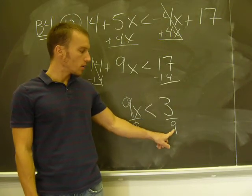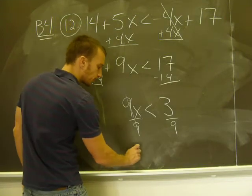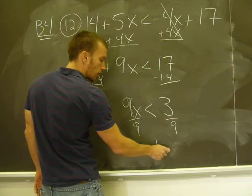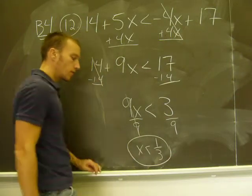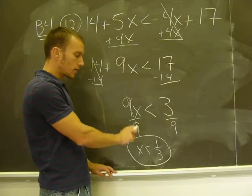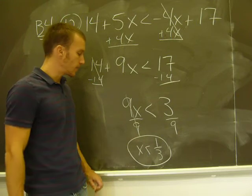Divide that by 3 is 1, this by 3 is 3. So my final answer is x is less than 1 third. Again, we didn't have to flip our inequality for this example because I divided by a positive. If I divide by a negative, you have to flip. In this case, I didn't.